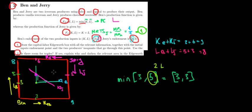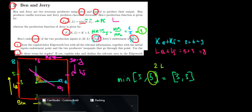Any difference between the isoquants signals that we can trade — we can exchange capital for labor. This gives us our room for trade, and we've answered both questions: we drew the Edgeworth box and identified the room for trade. In the next video, we'll discuss exactly how the trade can take place.